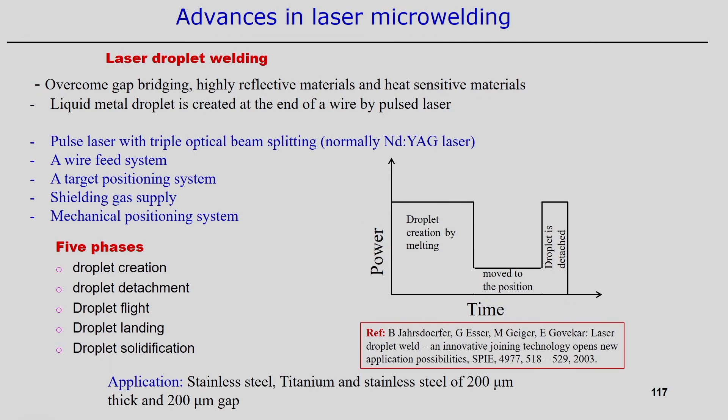Another advance in laser micro welding is laser droplet welding. Laser droplet welding overcomes gap bridging between two components — situations involving highly reflective materials or high heat-sensitive materials. In such situations, laser droplet welding can be used to join two micro components.